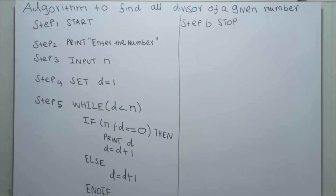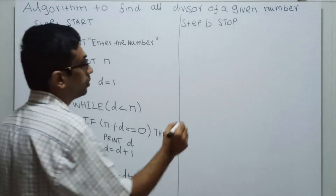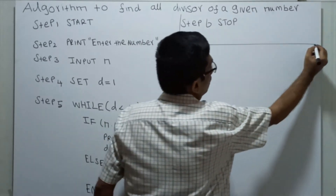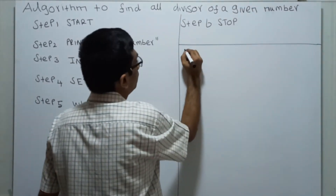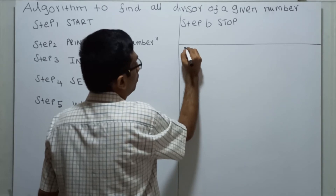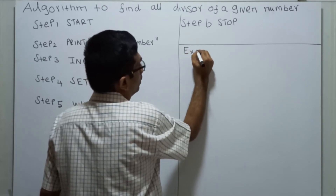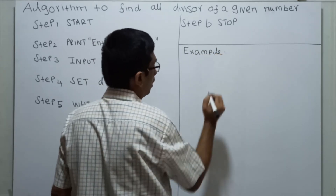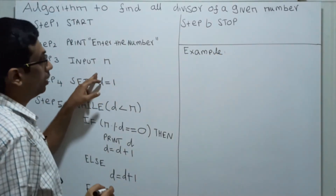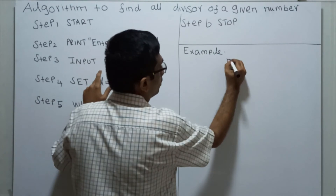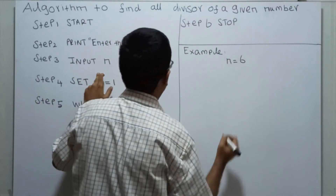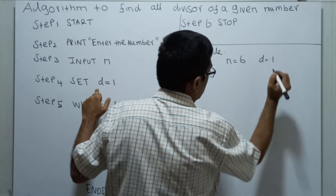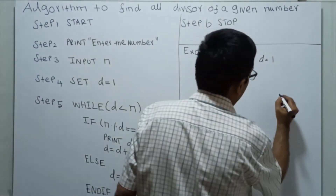Now we will discuss how this algorithm works — we will discuss an example. I am giving a value N equal to 6 and D equal to 1. This is my output.